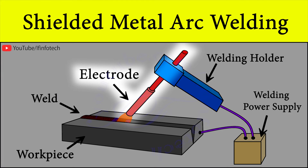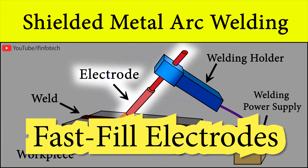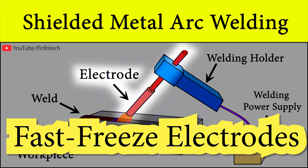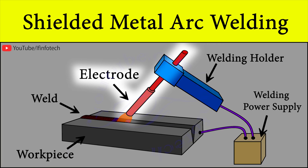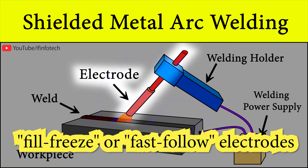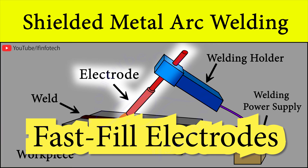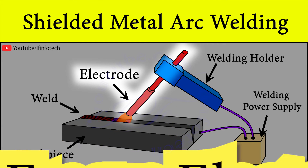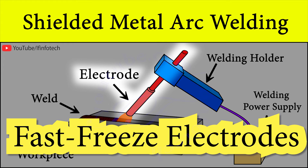Electrodes can be divided into three groups. Those designed to melt quickly are called fast-fill electrodes, and those designed to solidify quickly are called fast-freeze electrodes. An intermediate type goes by the name fill-freeze or fast-follow electrodes. Fast-fill electrodes are designed to melt quickly so that welding speed can be maximized, while fast-freeze electrodes supply filler metal that solidifies quickly, making welding in a variety of positions possible by preventing the weld pool from moving before it solidifies.